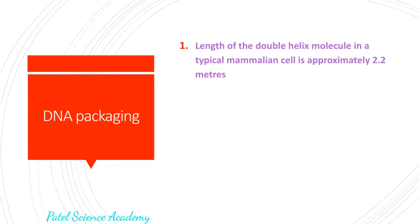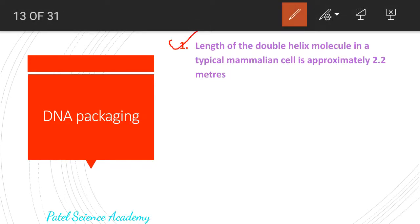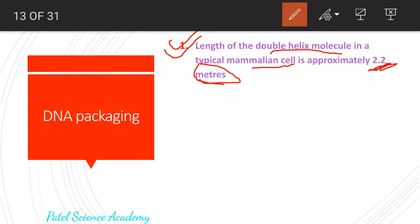The length of the double helix molecule in a typical mammalian cell is approximately 2.2 meters. Dear students, just remember it — what is the length of the double helix molecule, means this DNA molecule in a typical mammalian cell? It is approximately 2.2 meters. It is a very amazing thing how this DNA is packed into such a small nucleus found in the cell.